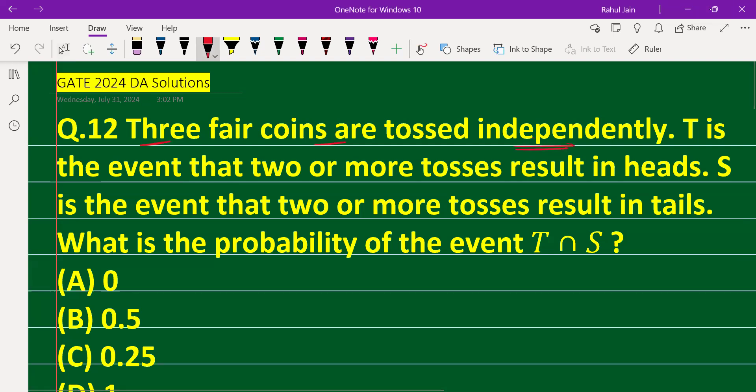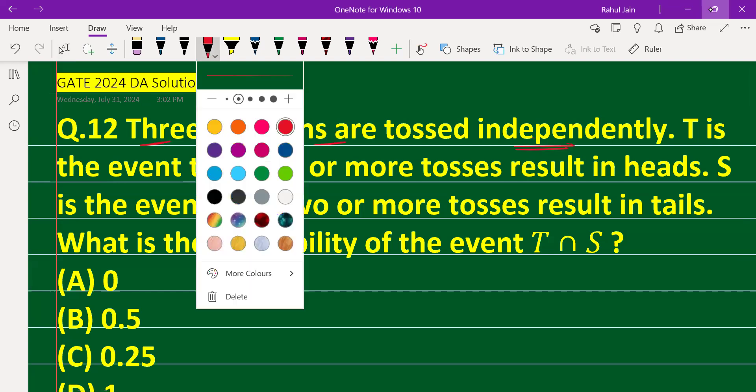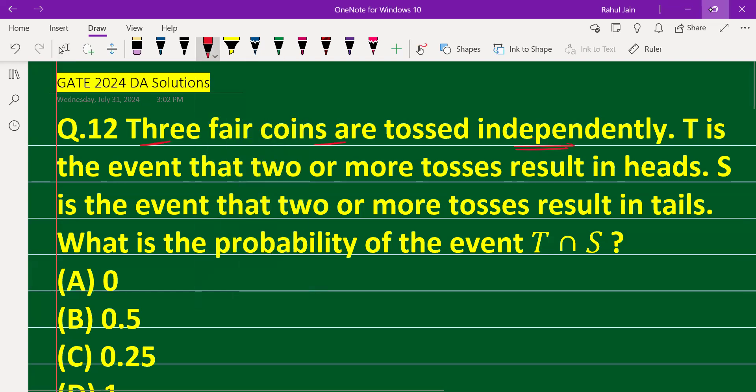Three fair coins are tossed independently. T is the event that two or more tosses result in heads, and S is the event that two or more tosses result in tails. What is the probability of T ∩ S?